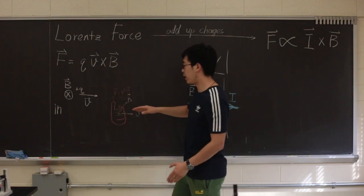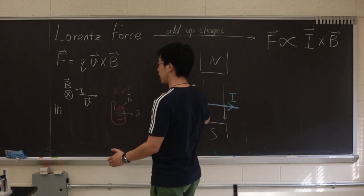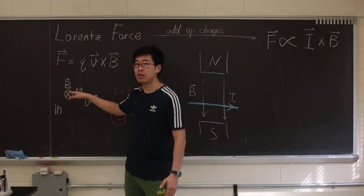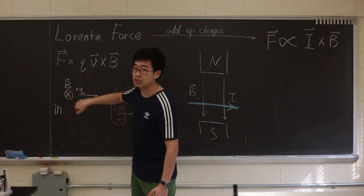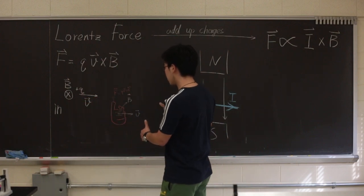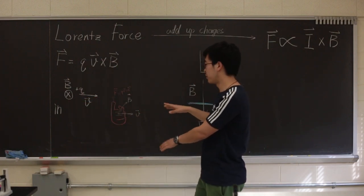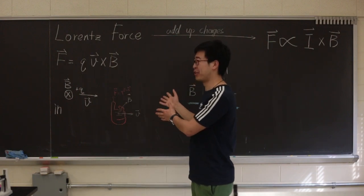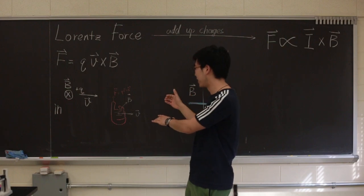For instance, we have a charge going from left to right, a positive charge with velocity V, and we have a magnetic field going into the chalkboard. Then we use our right-hand rule. I mean, that's the best drawing I ever did. So I think that's good enough illustration.